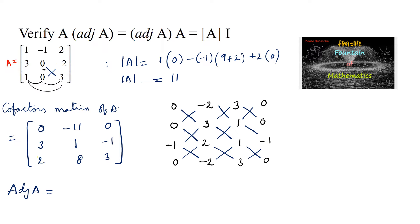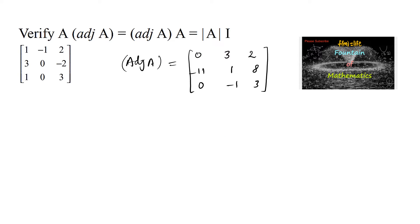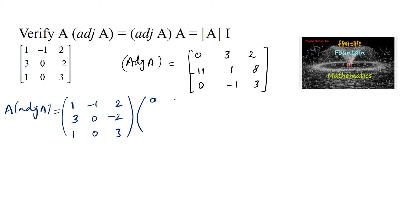The adjoint matrix equals the transpose of the cofactor matrix. So writing: first column becomes first row: 0, 3, 2; second column becomes second row: -11, 1, 8; third column becomes third row: 0, -1, 3. This is the adjoint of A. Now let's multiply A into adjoint of A: A is [1, -1, 2; 3, 0, -2; 1, 0, 3] multiplied with adjoint [0, 3, 2; -11, 1, 8; 0, -1, 3].